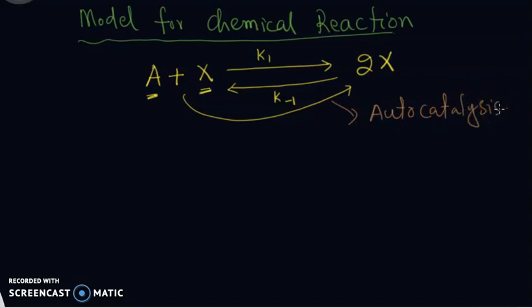This reaction also has a reverse process. In other words, these two X will break and give one molecule of A and one molecule of X. Now suppose X is the concentration of molecule X and A is the concentration of molecule A. Let X be the concentration of chemical X and A be the concentration of chemical A.